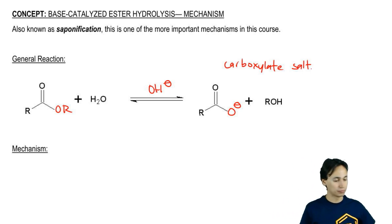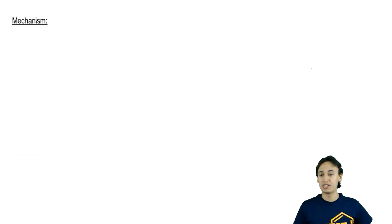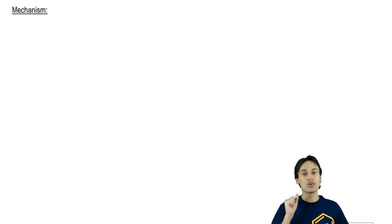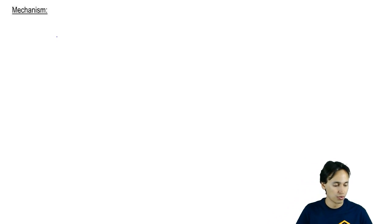Now we're just going to go through the mechanism. I'm not sure if you've heard me say this before, but in general, in organic chemistry, a base-catalyzed mechanism is always easier than an acid-catalyzed mechanism. This is actually going to be a very straightforward mechanism.